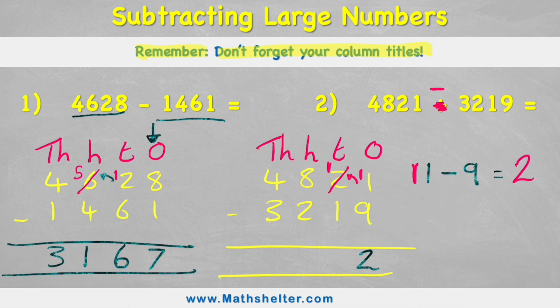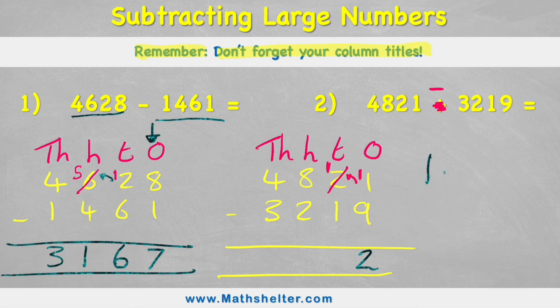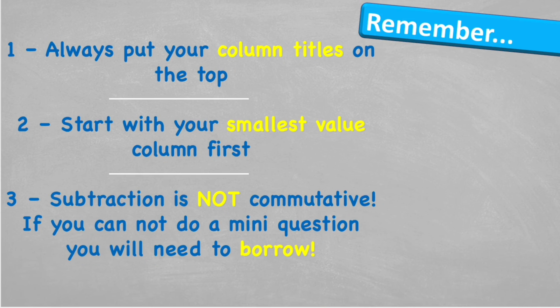So the answer in the answer row for my ones would be a two. Now my next question is looking at my tens, and I have one ten subtract one ten. That obviously equals no tens. Now in my hundreds, I have eight hundred subtract two hundred. That equals six hundred. And finally my thousands: four thousand subtract three thousand equals one thousand. So my answer to four thousand eight hundred and twenty-one subtract three thousand two hundred and nineteen is one thousand six hundred and two. Simple!